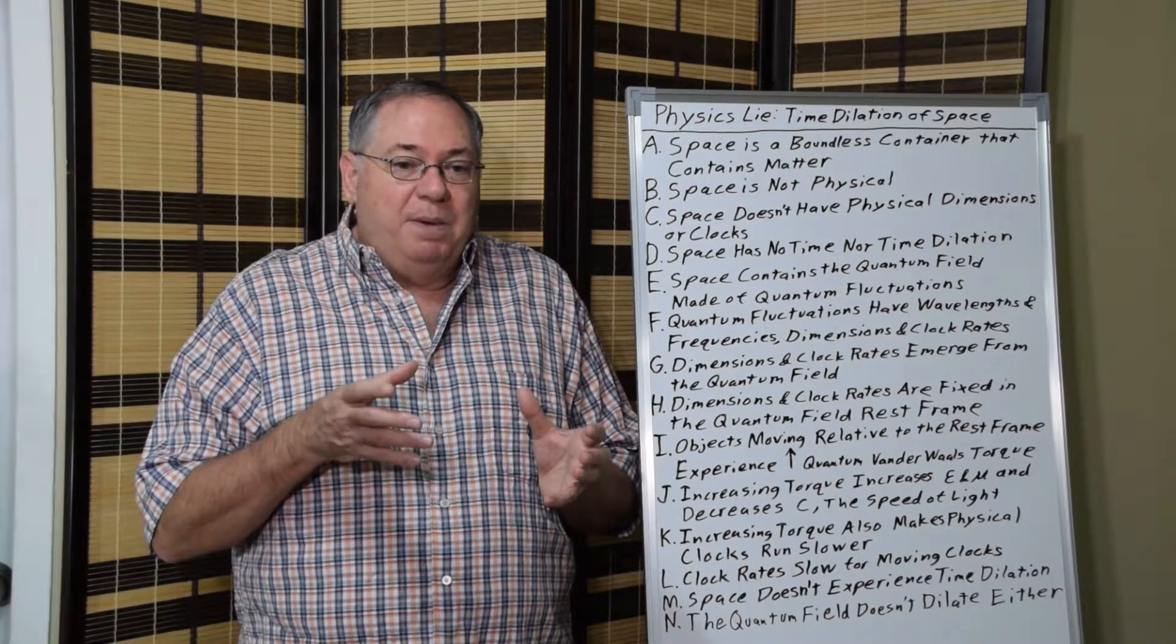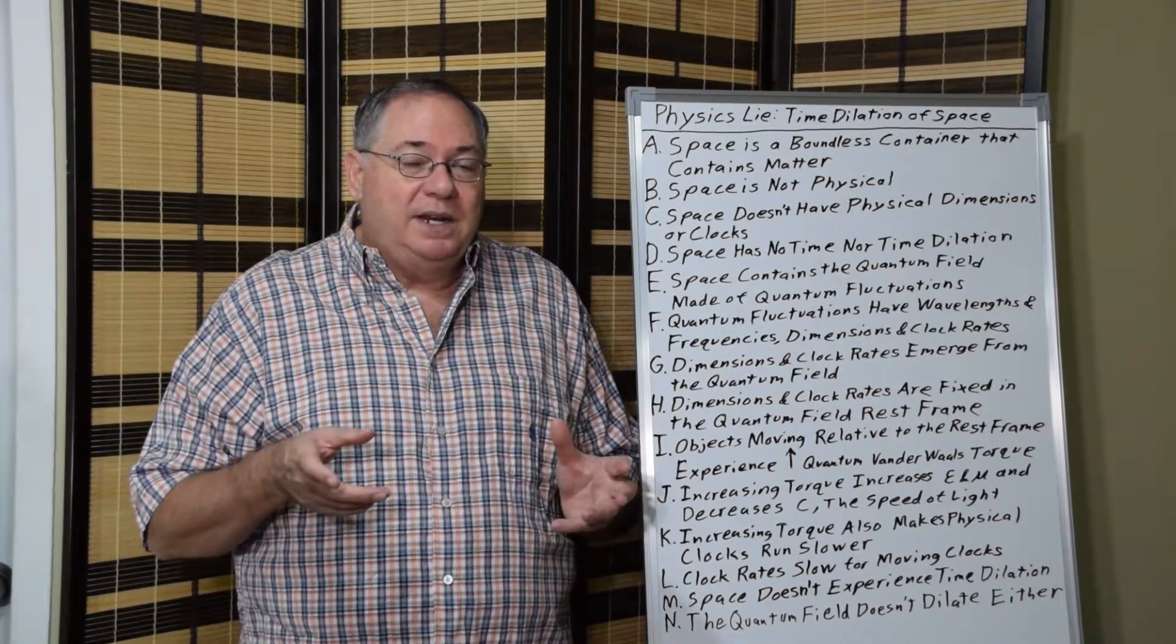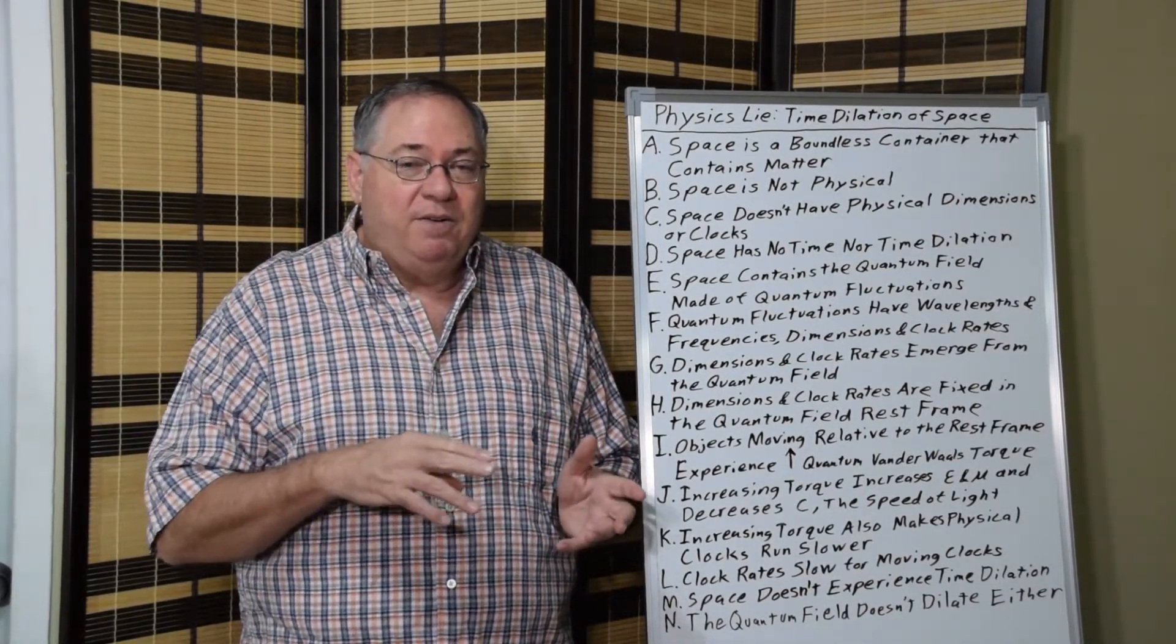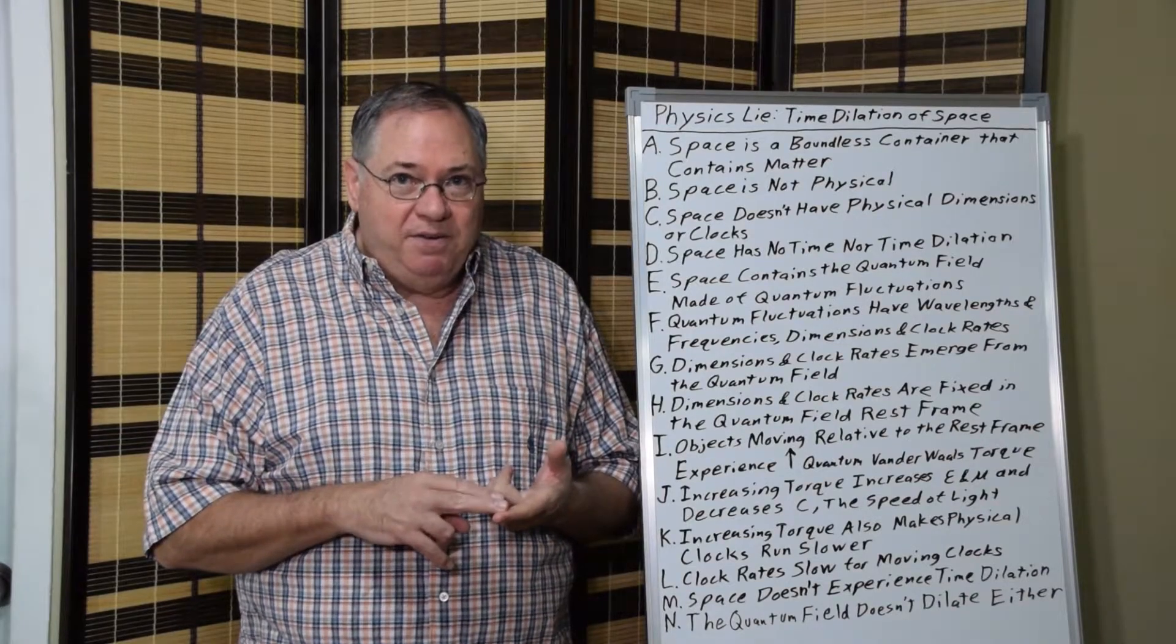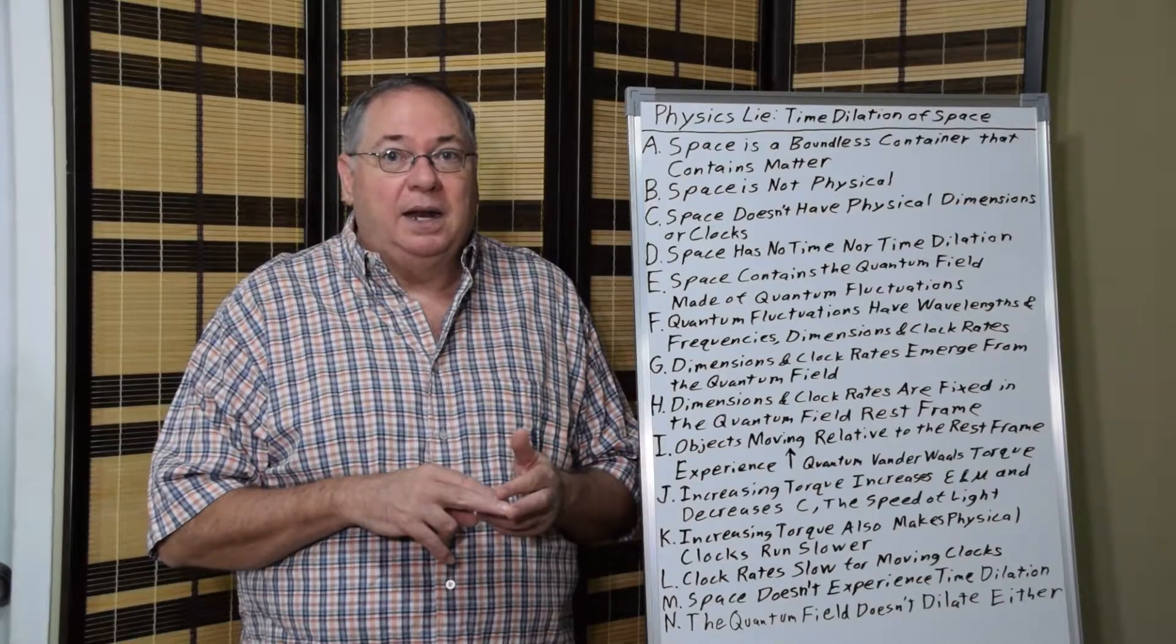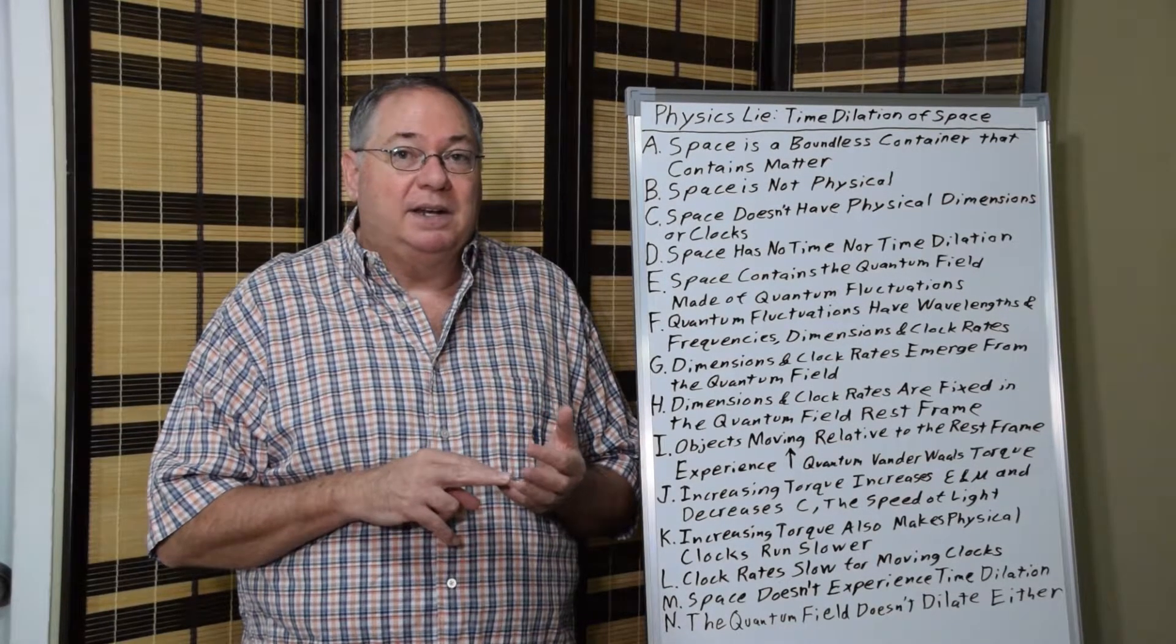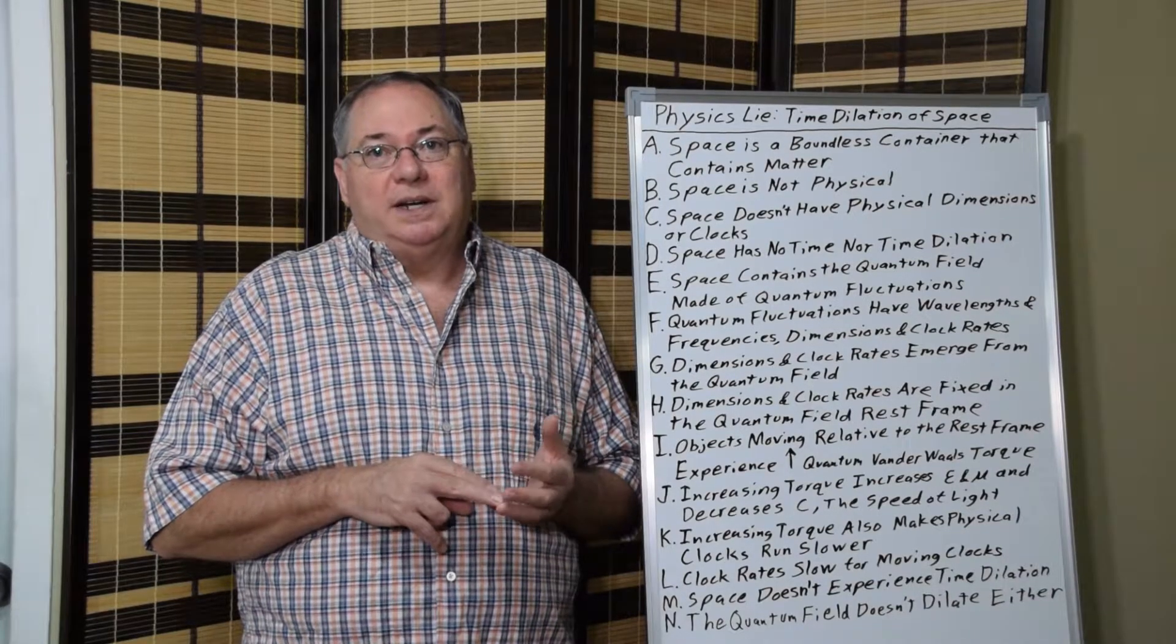And the resistance becomes the relativistic mass energy of the object. But what happens with time is not only does moving the object increase the resistance, which increases the permittivity and permeability, the electric and magnetic constant, and decreases the speed of light effectively, it also slows clock rates.